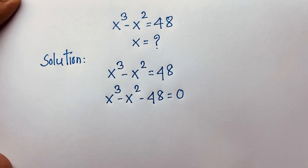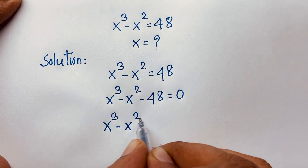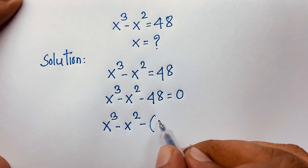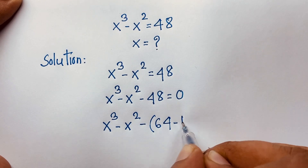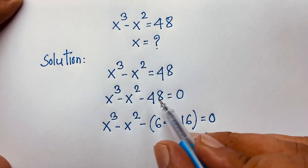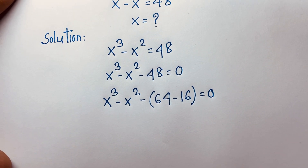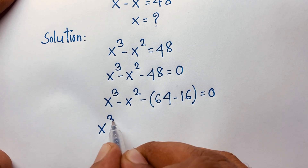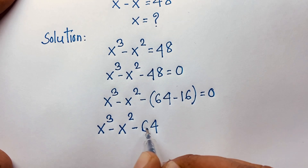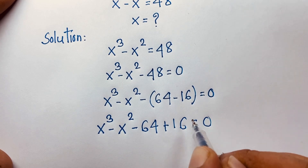Now, at this moment you can see here x to the power 3 minus x squared minus 48, and this 48 can be written as 64 minus 16, which equals 0. You can see 64 minus 16 equals 48.